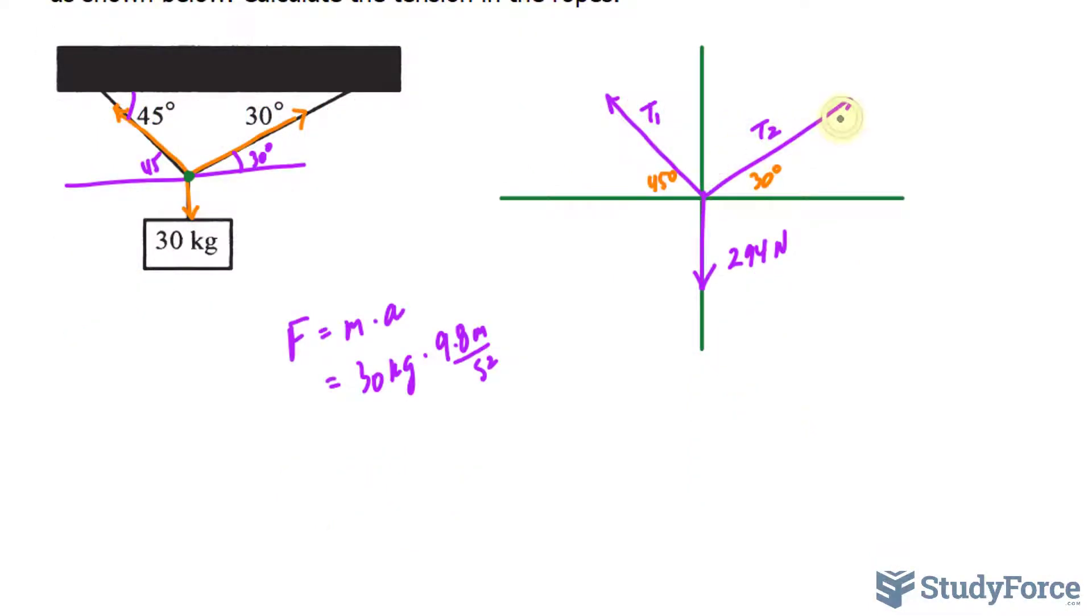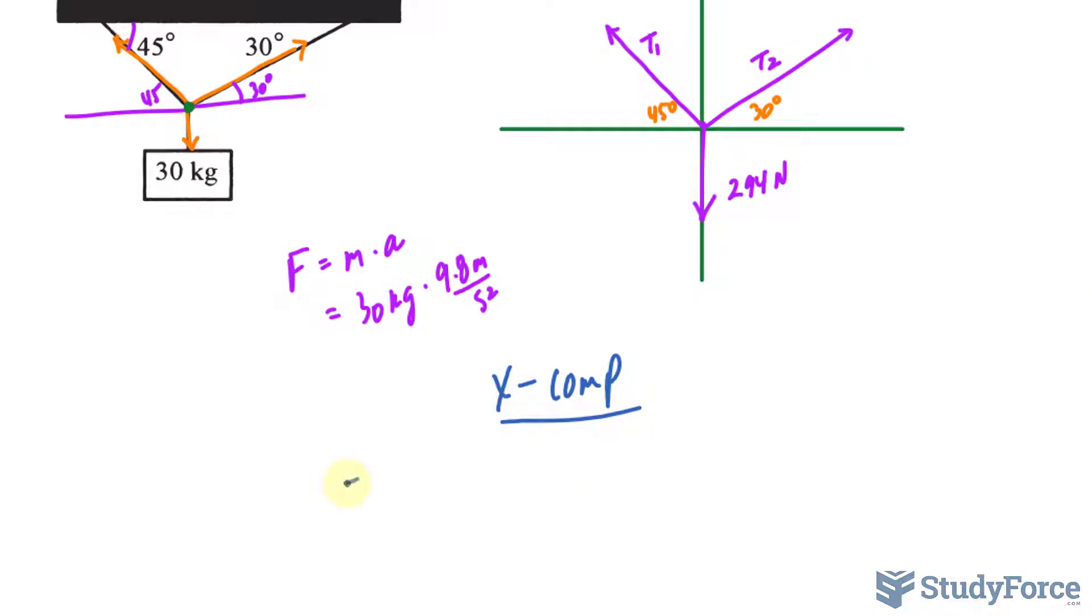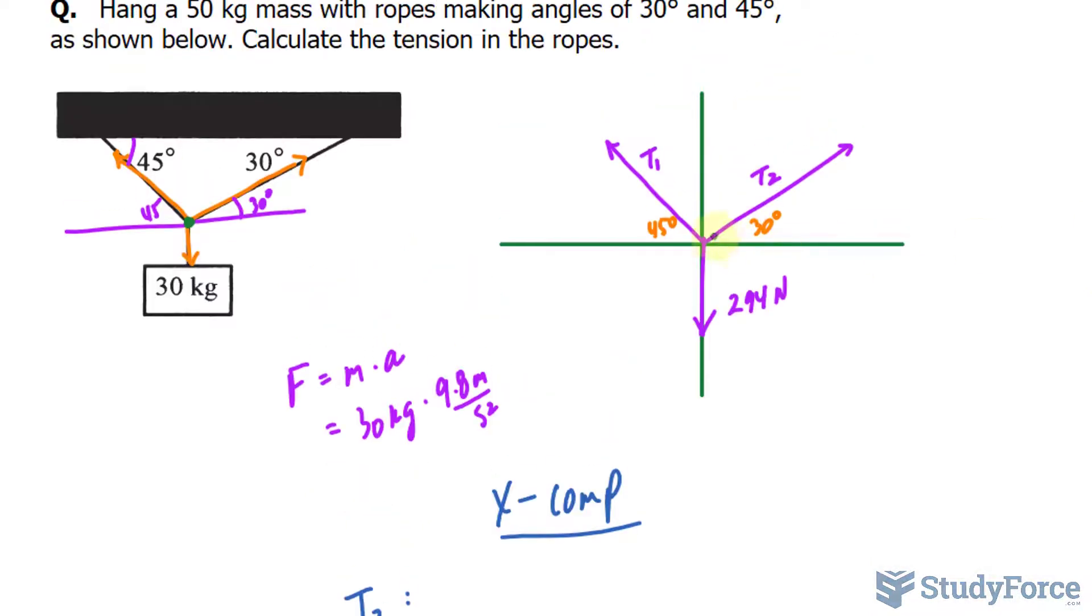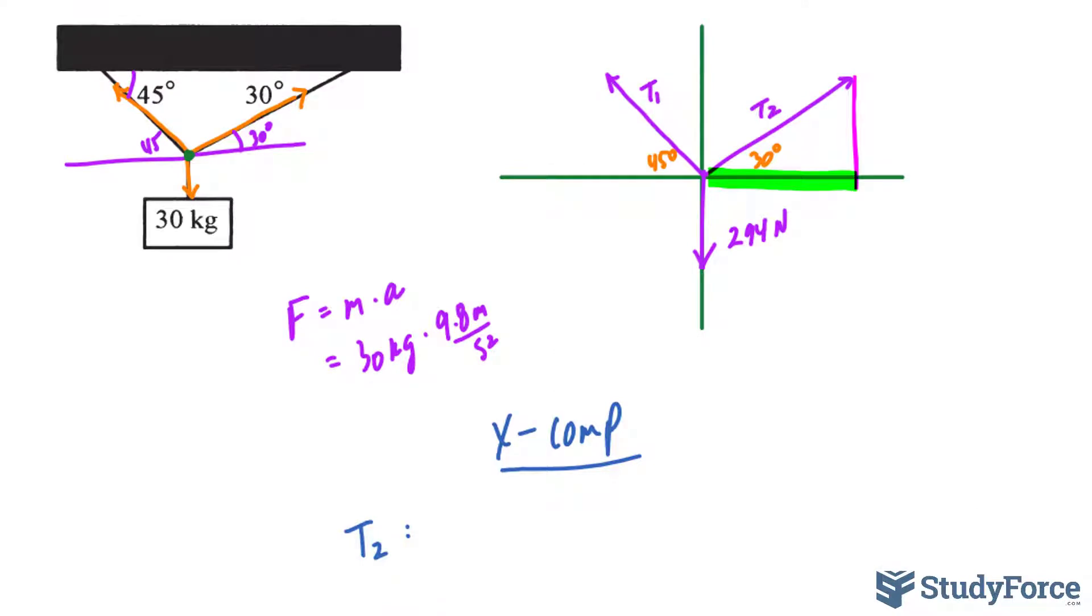Let's begin by finding the x component of T2. For T2, to find the x component which is this part of the vector, remember the vector can be broken down into two parts: the x and y component. To get that part, we will have to use trigonometric functions. We have the adjacent relative to 30 degrees and we also want to find the tension in the rope associated with the hypotenuse. Adjacent and hypotenuse is cosine.